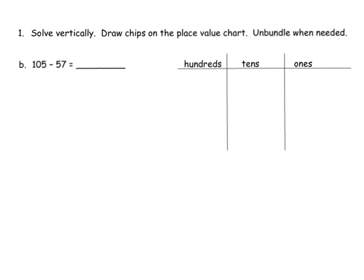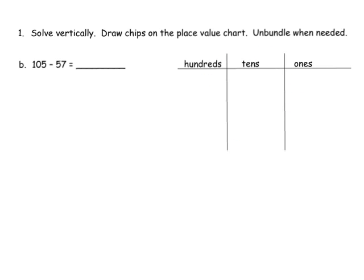The directions say solve vertically and draw chips on the place value chart. This is going to be our training wheels. Teachers, if some kids want to do the standard algorithm first and then confirm, that's fine. Or if they want to do the place value chart thing first and then solve vertically, it's up to you as the teacher — you're in charge. Read your classroom and do what's right.